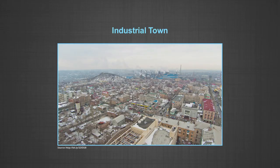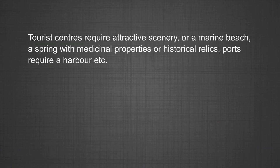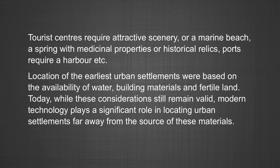Location: Location of urban centers is studied with reference to their function. For example, the siting requirements of a holiday resort are quite different from that of an industrial town, a military center, or a seaport. Strategic towns require sites offering natural defense. Mining towns require the presence of economically valuable minerals. Industrial towns generally need local energy supplies or raw materials. Tourist centers require attractive scenery, a marine beach, a spring with medicinal properties, or historical relics. Ports require a harbor. Location of the earliest urban settlements was based on the availability of water, building materials, and fertile land.